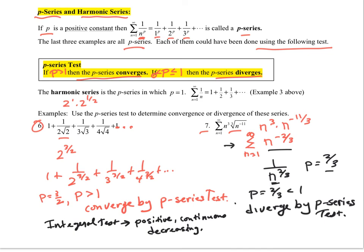And then for the p-series test, it's 1 over n to the p. We have the statement: p greater than 1, then the p-series converges; p less than or equal to 1, then the p-series diverges. I hope you enjoyed this. Thanks for listening and have a great day.